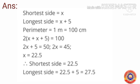So the shortest side equal to 22.5. Longer side equal to 22.5 plus 5, 27.5. So the length is equal to 27.5 and breadth is equal to 22.5. Is it clear for you children?